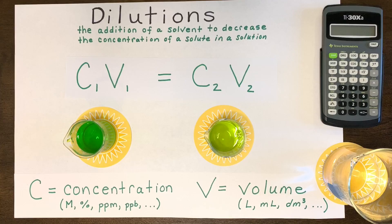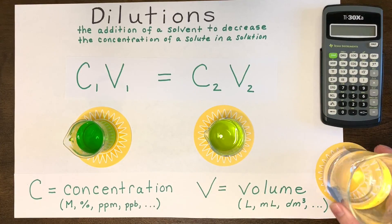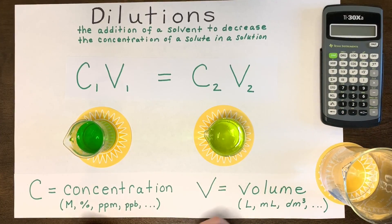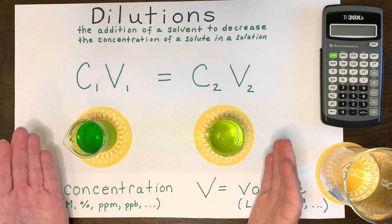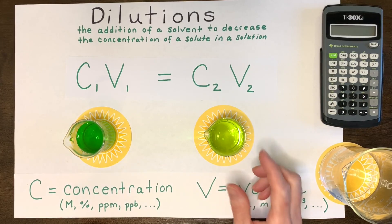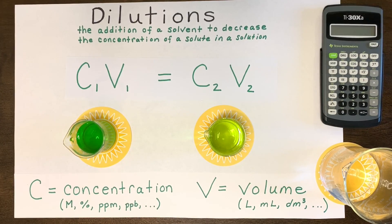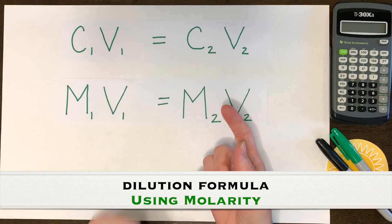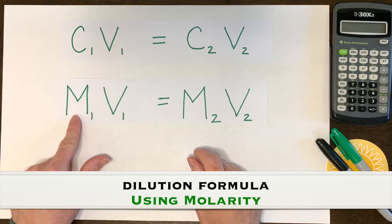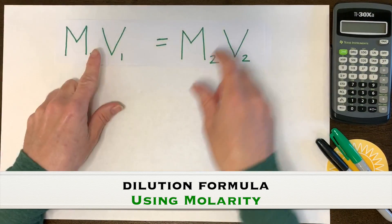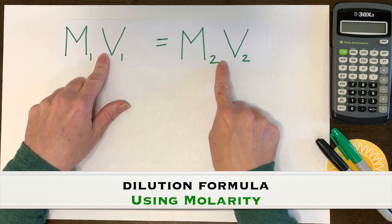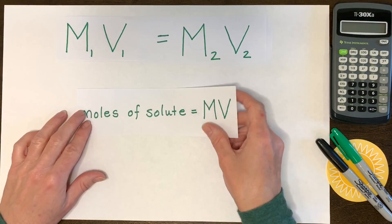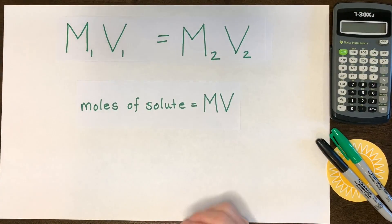When you pour your more concentrated solution into a container and add more solvent — in this case water — you haven't changed the moles or the amount of solute. You have only changed the total concentration because you have more solvent. The most common version of the C1V1 = C2V2 equation uses molarity for concentration. The 1s refer to the initial or more concentrated solution, and the 2s refer to the dilute solution.